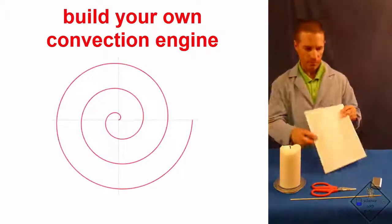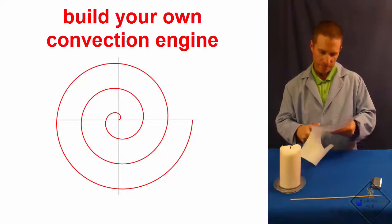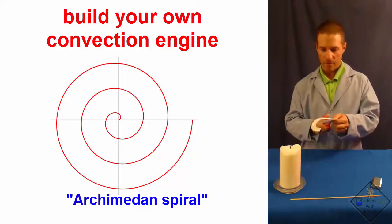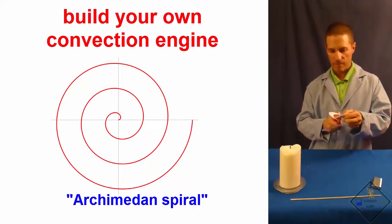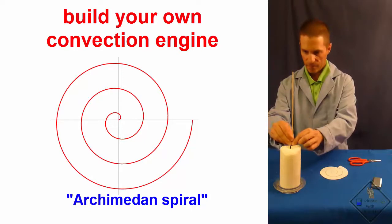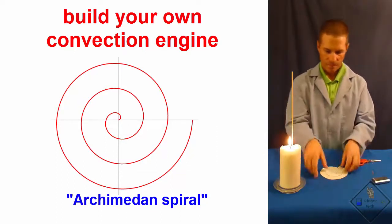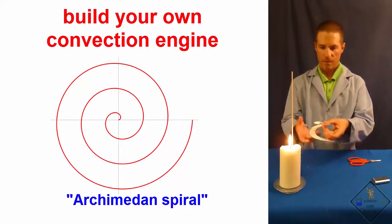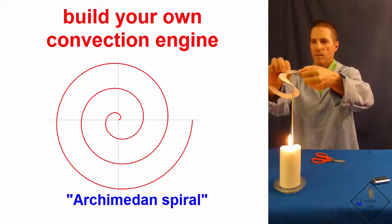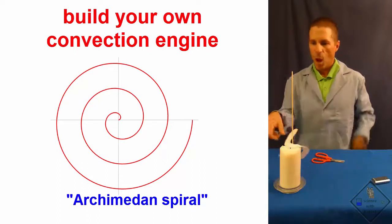Convection can be used for other things besides making quarters bounce on a cold bottle and ivory soap bars expand in a microwave oven. It can be used to make a convection engine. Dr. Smith is cutting out a spiral that you can draw yourself or find on the internet. He then places a wooden skewer in a candle to hold the spiral over a candle flame. This looks like a disaster waiting to happen, Dr. Smith. It works! I told you so!